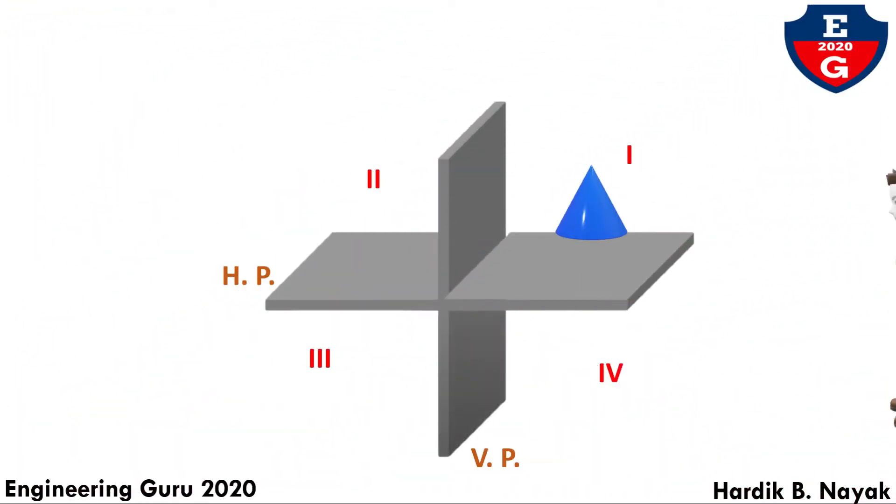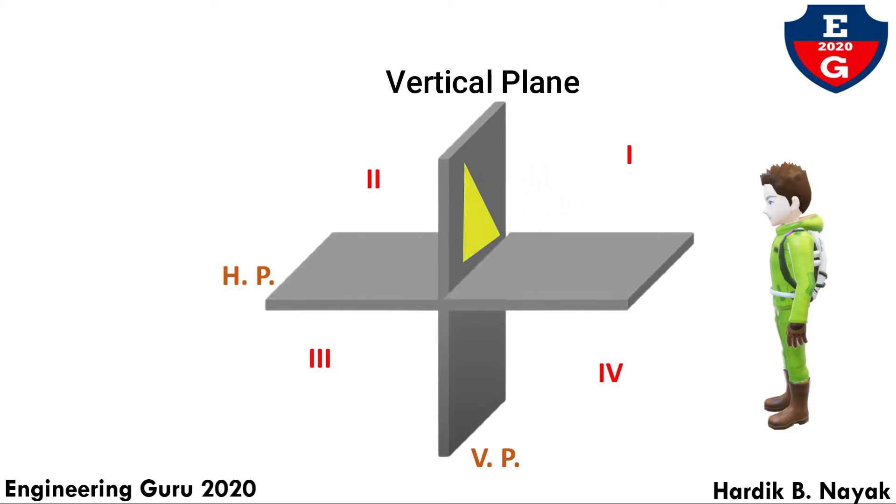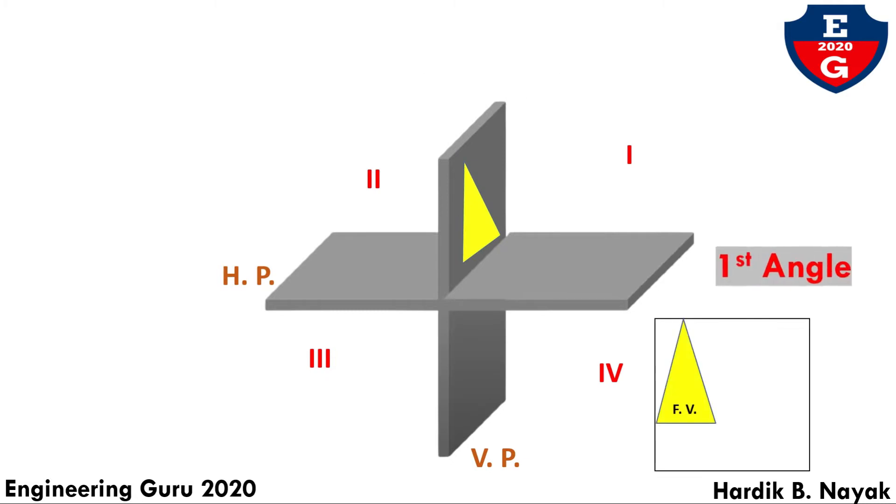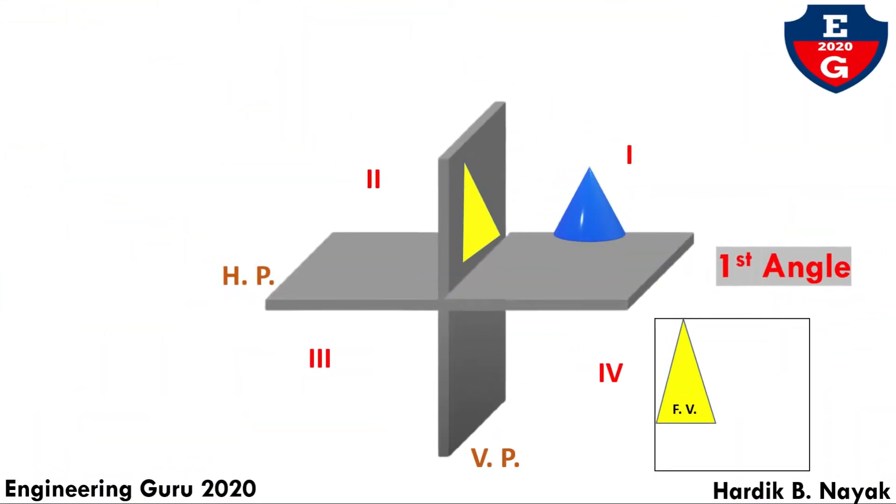When the object is in first quadrant, observer will see from the front end and it will be projected on vertical plane. We will draw front view. Then observer sees from top, it will be projected on horizontal plane. That will come down. So in first angle, the front view comes up and top view comes down.